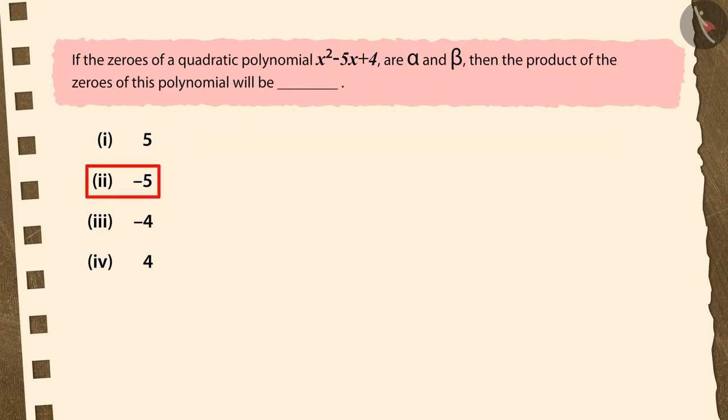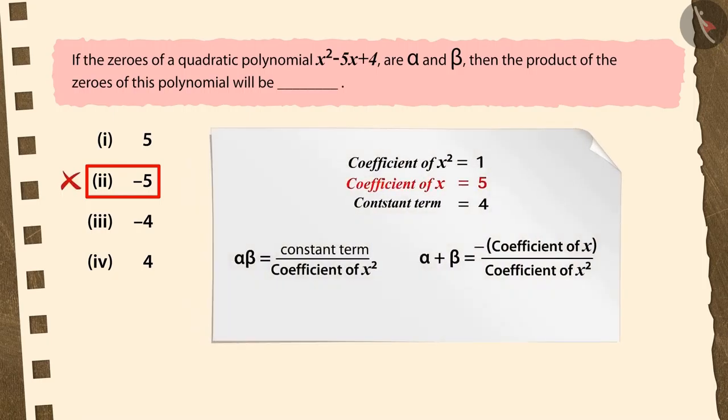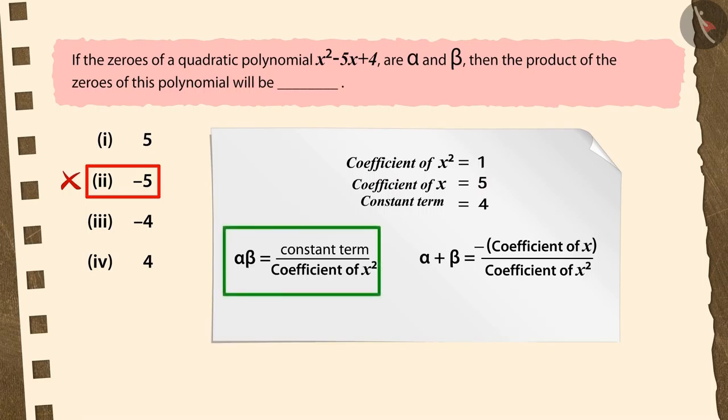If you have selected the second option, then your selection is incorrect. There are two reasons. First, while writing the coefficient of x, you forgot to prefix it with negative sign. Second, instead of using the formula for product of zeros here, you have used the formula to find their sum.